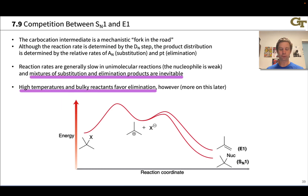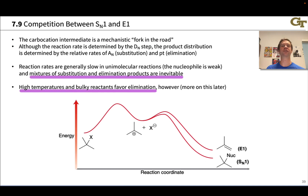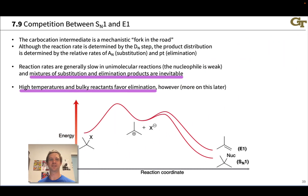Bulky reactants can also favor elimination. For example, use of a bulky solvent like tert-butanol means that bulky nucleophile or base has a hard time accessing the cationic carbon kinetically. This tends to favor elimination since the beta-hydrogen is more sterically accessible than the cationic carbon, especially for highly substituted cations like tertiary carbocations.